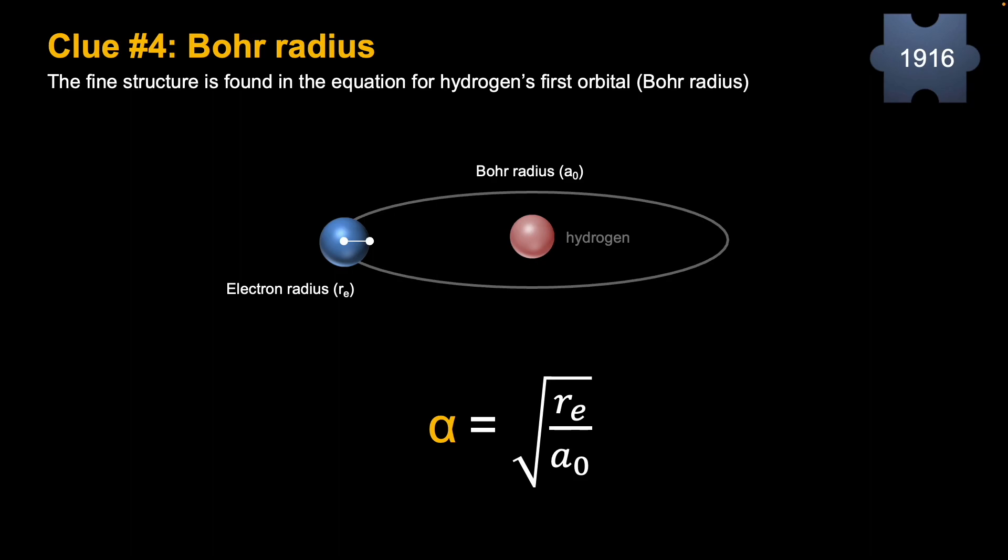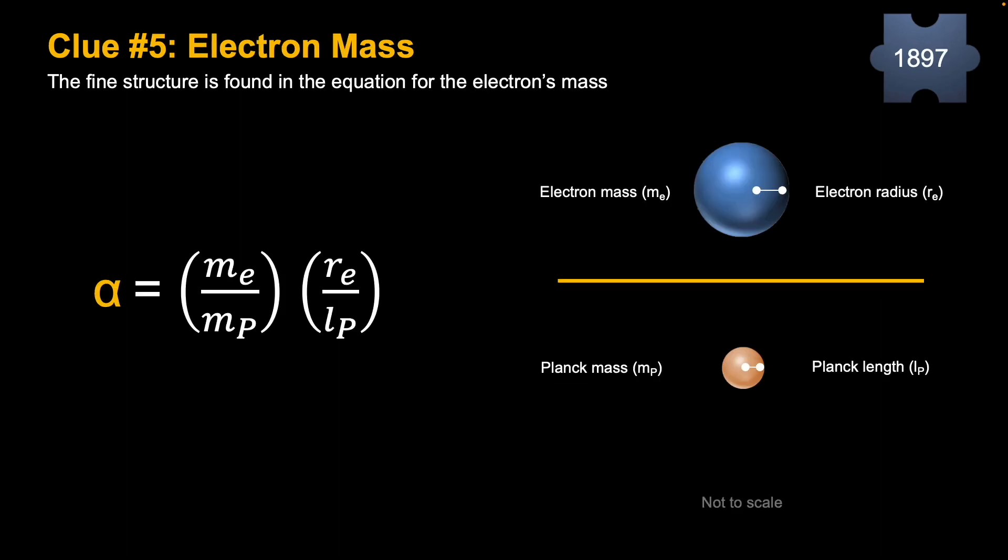But again, why is it related to orbitals? And the last one, returning back to some of the Planck units, is why is it related to masses, like the electron's mass and the Planck mass? And first off, what is the Planck mass? So if you do a ratio of the electron's mass and multiply it by the electron's classical radius, and then you divide that by the Planck mass multiplied by the Planck length, again you get alpha.